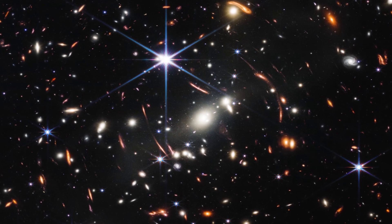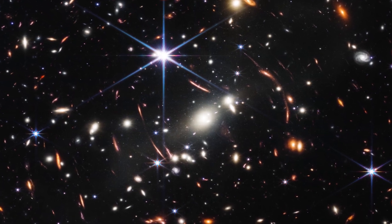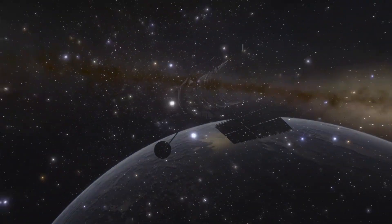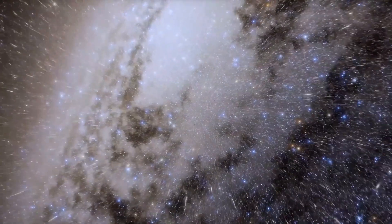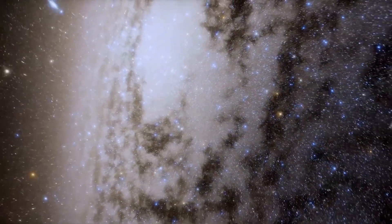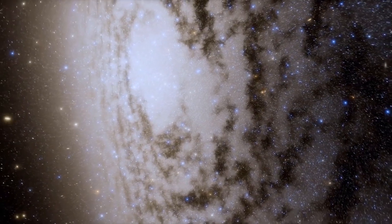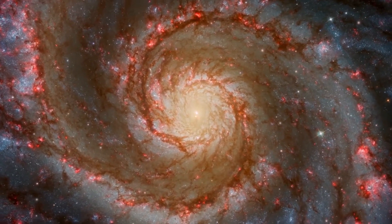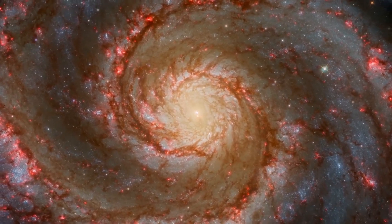The fact that the observed galaxies are two to three times smaller than similar galaxies imaged by the Hubble Space Telescope completely defies the expected behavior in an expanding universe. According to the hypothesis, as the universe expands, objects should appear larger as distance increases. However, these James Webb observations show galaxies that defy that expectation.